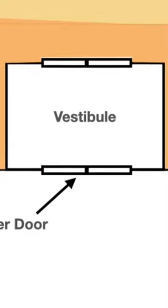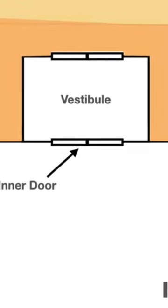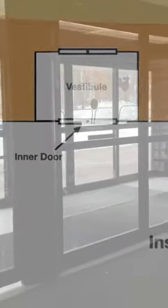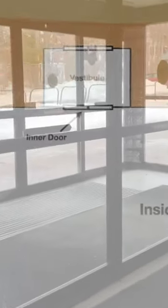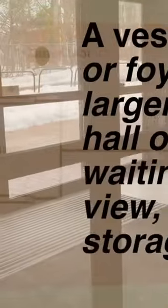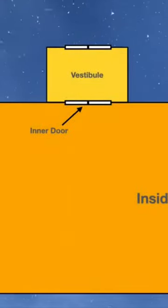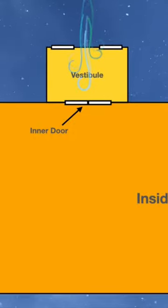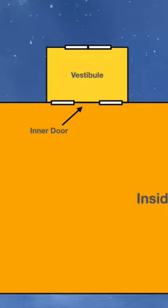A vestibule is a small room that essentially creates a neutral zone between the inside and the outside of a building. Vestibules are created for all kinds of reasons, but the main reason is invariably to prevent outdoor air from gaining direct access to the indoor climate-controlled area of a building.